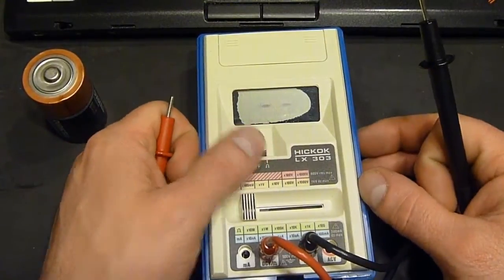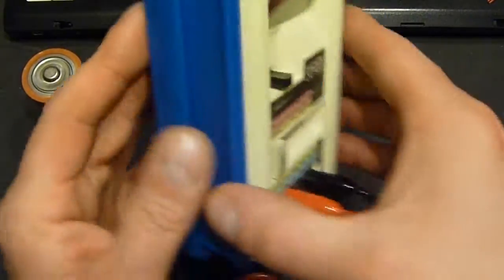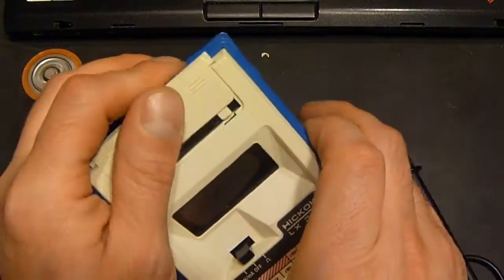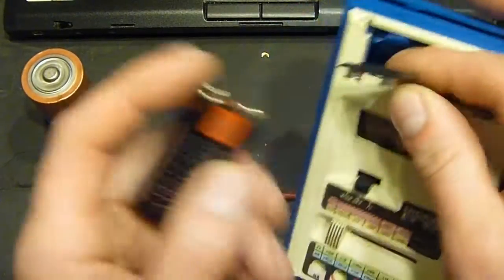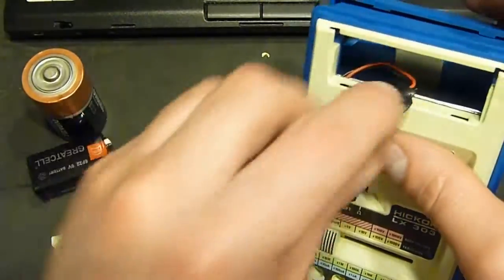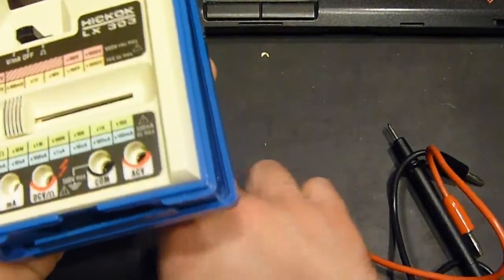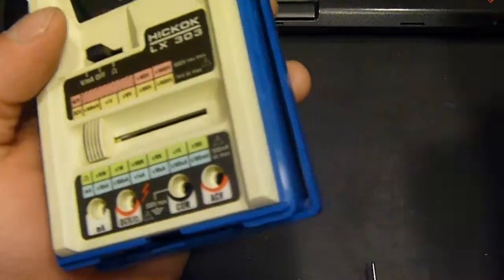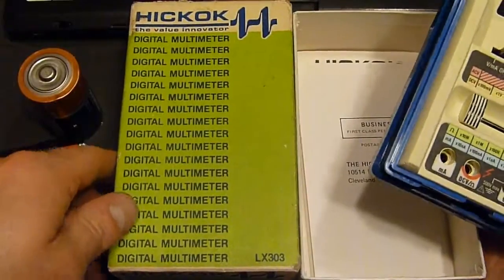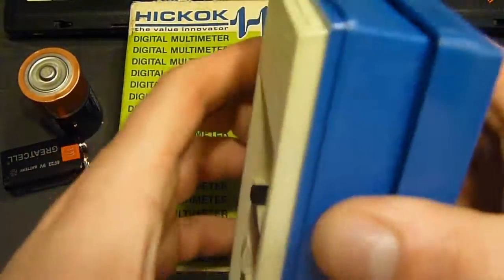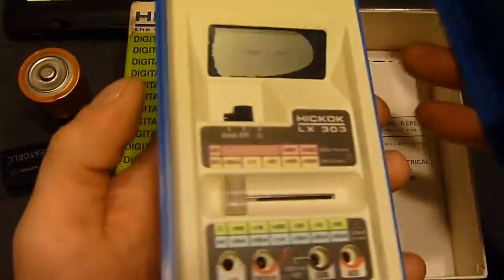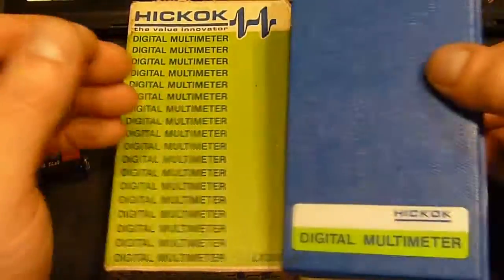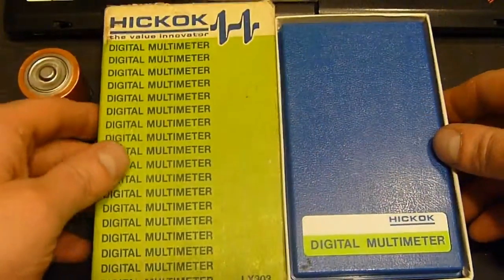Anyway it's a neat little gizmo there and you can see I have the back cover on here and I'd assume there'd be a pair of cheapy leads in there. Yeah it's the great cell battery. Anyway, there we go. The Hickok LX303 digital multimeter. Nice little compact case there. All right there we go and thanks for watching.